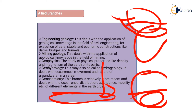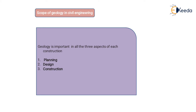Geochemistry is a relatively recent branch that deals with the occurrence, distribution, abundance, and mobility of elements in the earth's crust — for example, silica and other key elements present in the crust. Geochemistry is important in all three aspects of a project: planning, design, and construction.